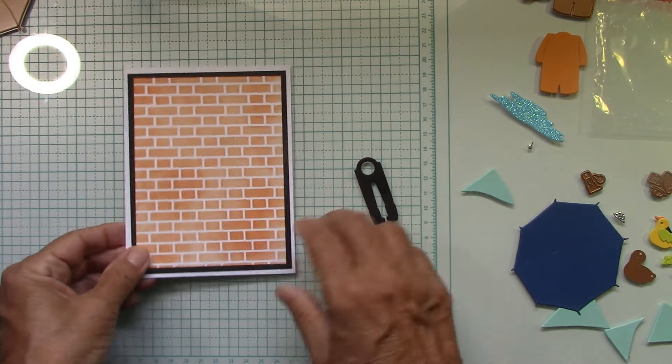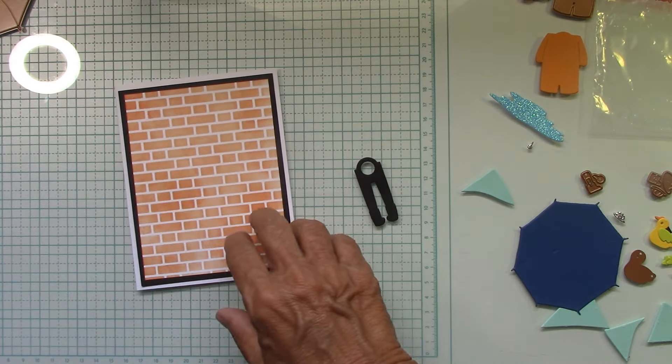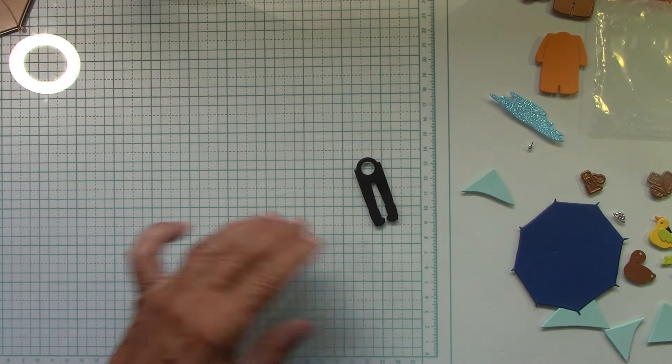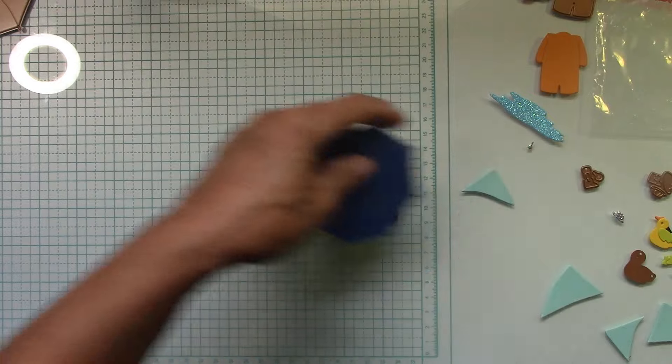Okay. So here's my background on my card. So that's fun. Right? That came out really nice. Okay. Let's talk about our dies here just like we always do. Here is the umbrella.